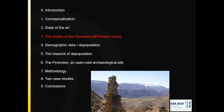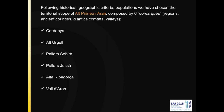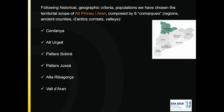The choice of the Pyrenees is not all the Pyrenees — we have to decide which kind and where. For historical, geographical, and population criteria, we have chosen the territorial scope of Alt Pirineu i Aran. Alt Pirineu i Aran is a high Pyrenees area, and Val d'Aran is an institutional definition for six regions — ancient counties, valleys — with Cerdanya, Alt Urgell, Pallars Sobirà, Pallars Jussà, Alt Ribagorça, and Val d'Aran. We are based in Barcelona, so it's this part of the Pyrenees.